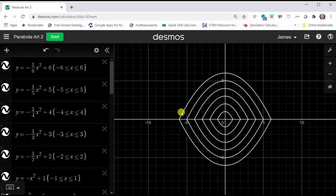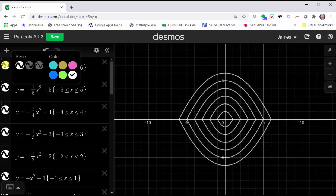We can also change the color of the pieces of the graph by clicking and holding on any of the white circles on the far left. Notice how there are six choices for color.